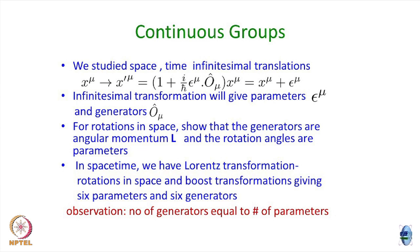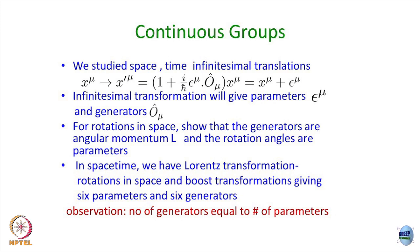For rotation in space, the generators are angular momentum and the rotation angles are the parameters — as I have already explained on the board. In space-time we have Lorentz transformations: rotations in space and boost transformations. Boost is the jargon for moving one frame with respect to another with velocity v_x, v_y, v_z. So clearly there are 6 parameters and 6 generators, one associated with each. For any transformation you can sit down and figure out the corresponding generators, how many there are, and the number of generators equals the number of parameters.